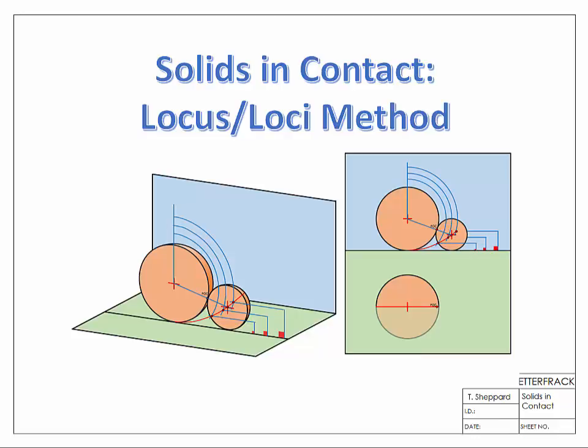Hello and welcome back to our webcast series on the topic of solids and contact. In this video we're going to look at how to use the locus or loci method to solve questions where we have a solid to be placed against an original solid and we don't know the radius or the size of this new solid. By way of background, we're going to look at what a locus or loci actually is.